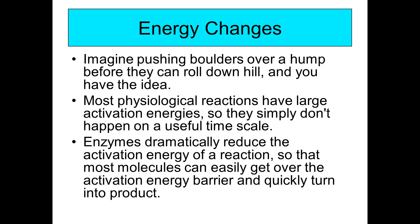When you're pushing a boulder up over a hill before it can roll back down, you have to push a lot of energy to get the rock up the hill, and then energy is expended rolling back down. Most physiological reactions have large activation energy, so they don't happen on a useful time scale. What enzymes do is reduce the activation energy of the reaction — instead of pushing the rock over a really huge hill, you're pushing it over a much smaller hill, so molecules can easily get over the energy barrier and quickly turn into product.